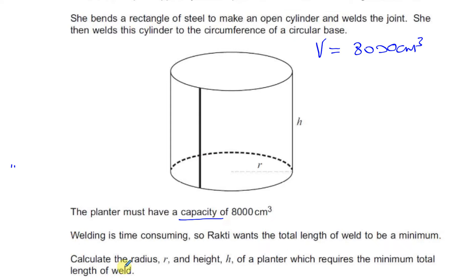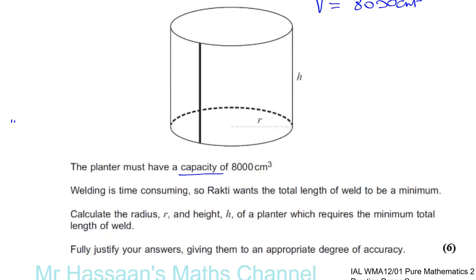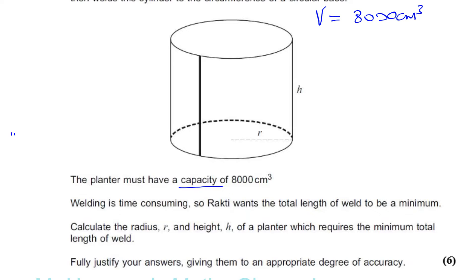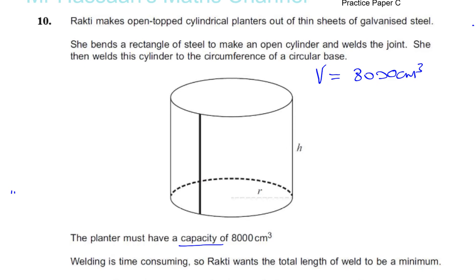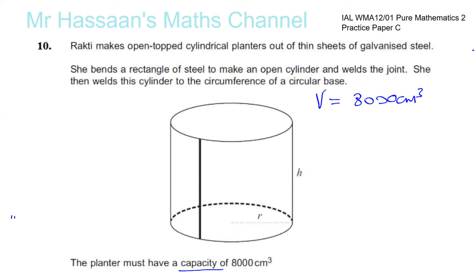Calculate the radius R and height H of a planter which requires the minimum total length of weld. Fully justify your answers, giving them to an appropriate degree of accuracy. They haven't given us the expression, so this is a question where normally they would give you the length of the weld equals some expression in terms of R or H, and then you differentiate it and find the minimum.